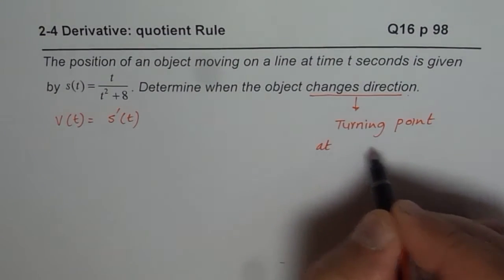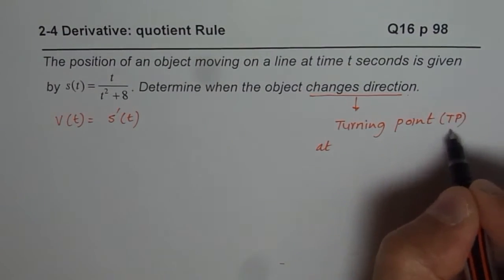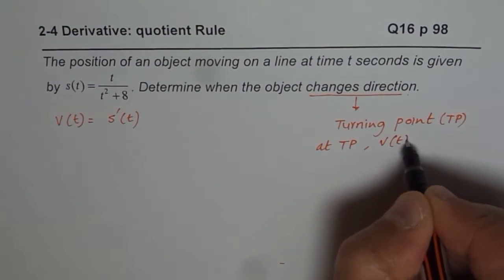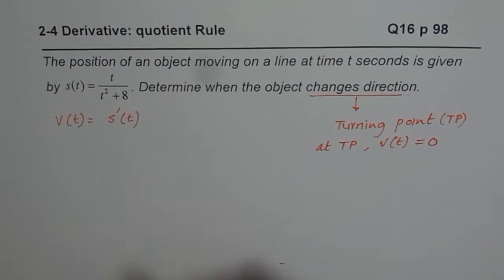At any turning point, let me write TP for turning point. At any turning point, velocity, I should say v(t) will be equal to 0.